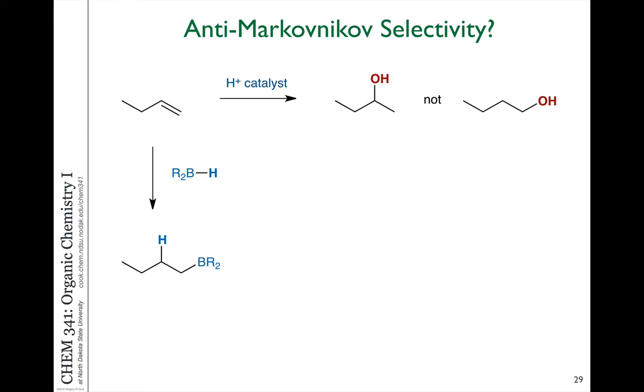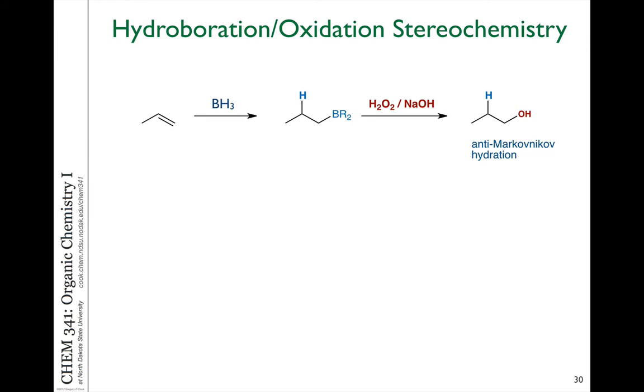The nice thing about boron compounds is under the right conditions, we can oxidize that. We can replace the boron with an OH group by using a basic solution of hydrogen peroxide. This is a really nice tool that allows synthetic chemists to be able to form a product which is not available by the direct addition of water under bronsted acid catalysis. We refer to this as an anti-Markovnikov hydration, or anti-Markovnikov selectivity, because it's essentially giving us the product of hydration that's opposite to what we would expect if we did it the normal way.